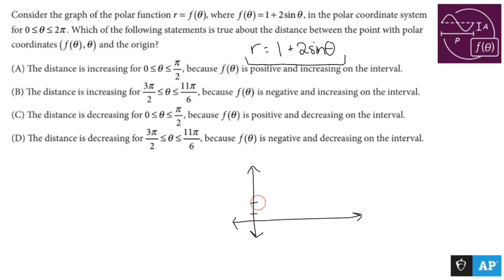We start at 1. Since there's a 2 there, we peak out at 3. And since this is a 2 there, we bottom out at negative 1. Sine theta is sine theta, so we're going to have regular old period stuff going on.